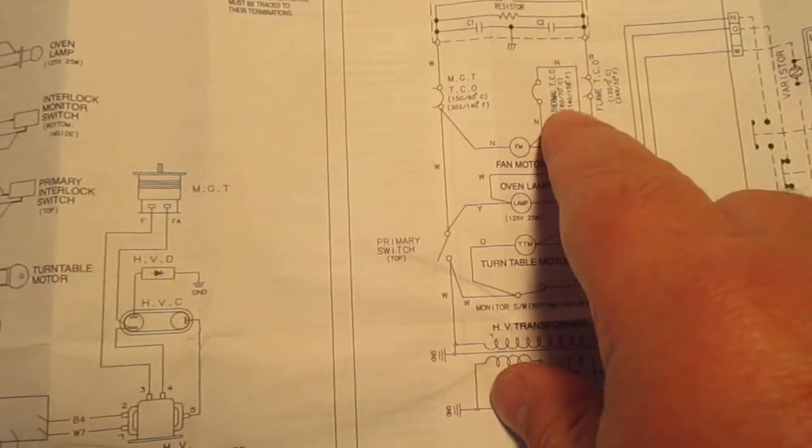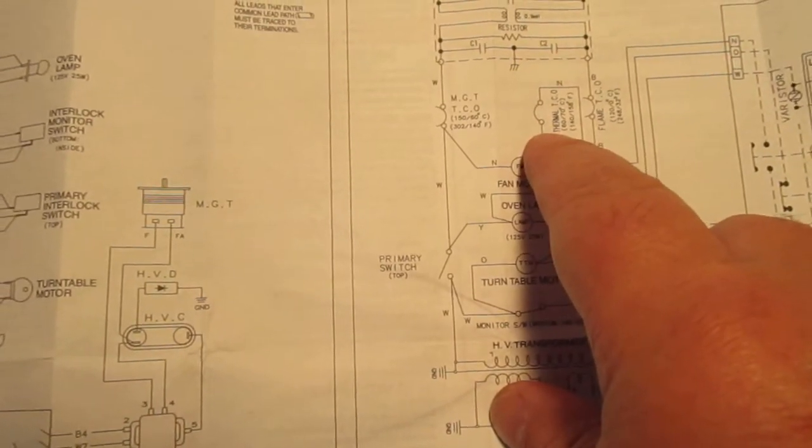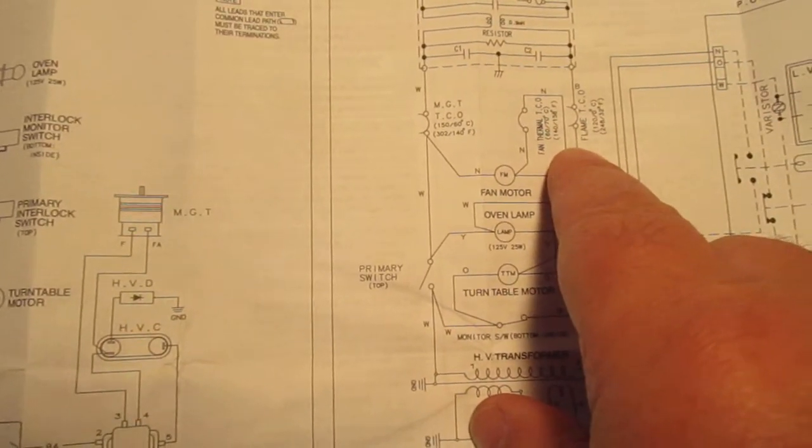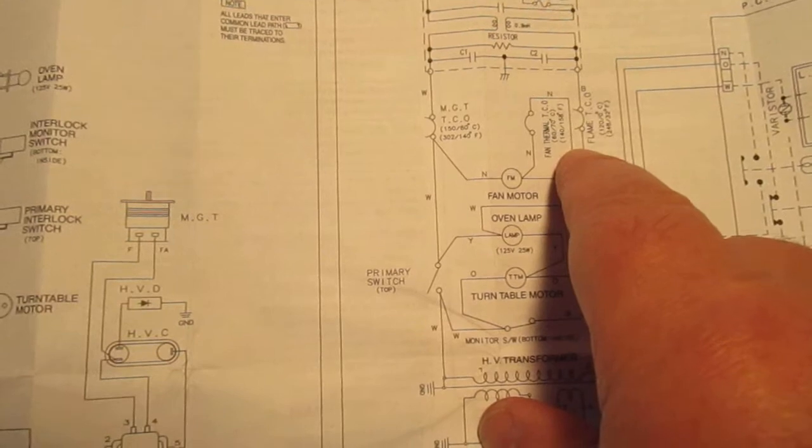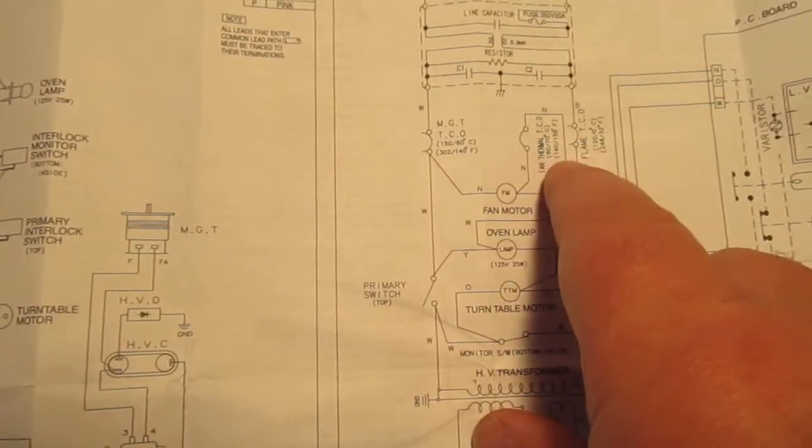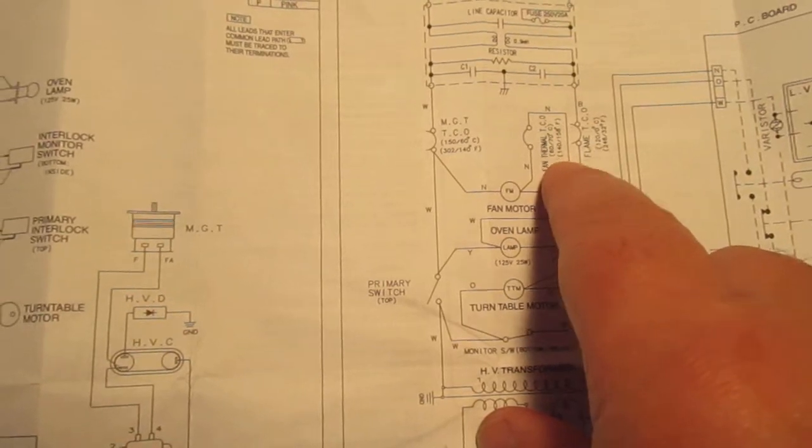Yes, when you put your continuity tester across the two poles of this fan thermal TCO, it will look like an open circuit. It only closes when it reaches the super high temperature. That's what you need to know.